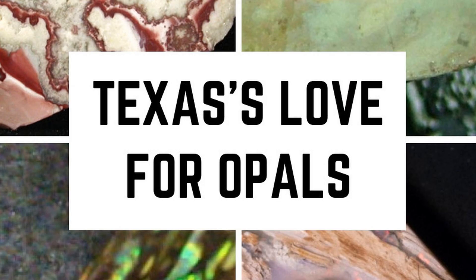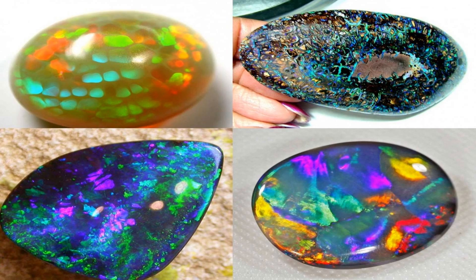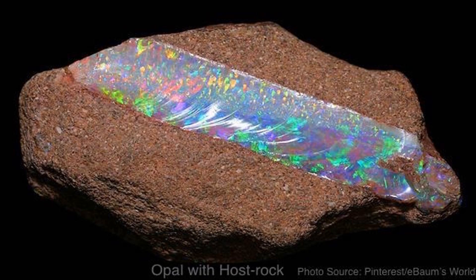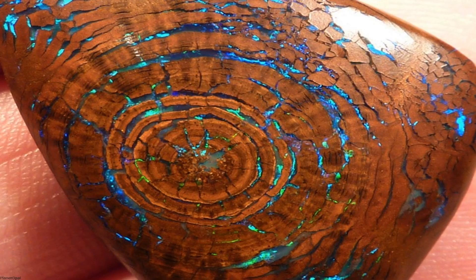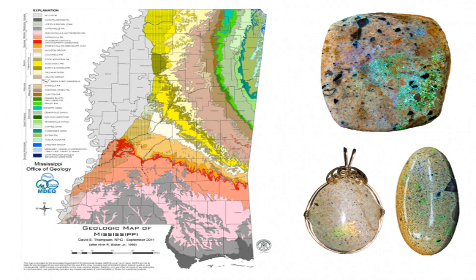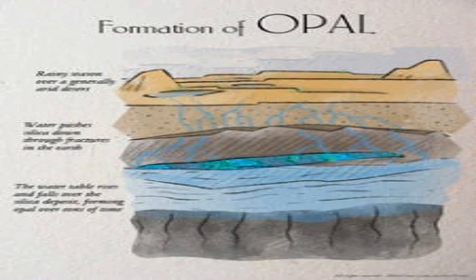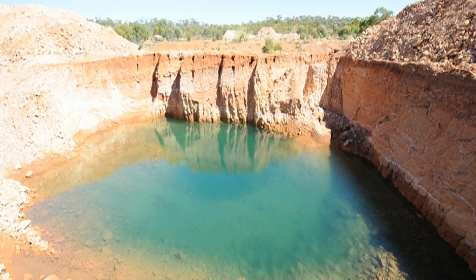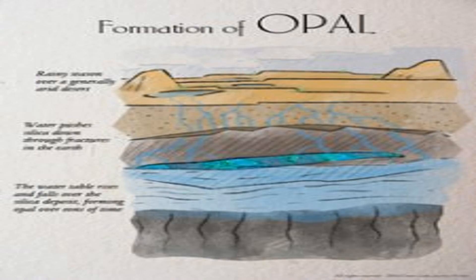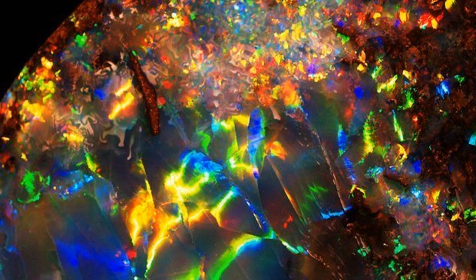The formation of opals is a fascinating geological process that takes place in subterranean locations. Typically, opals form in cracks and cavities within igneous or sedimentary rocks. Over time, due to the passage of water through these rocks, silica-rich fluids find their way into these cavities. The layers of silica gradually build up over time and eventually solidify to form opal. This process can take millions of years, and the final result is a unique gemstone that bears the beautiful iridescence that opals are famous for.